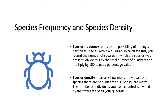Species frequency is basically referring to the possibility of finding a particular species within a quadrat. To calculate this, you record the number of squares in which the species is present, divide that by the total number of quadrats that you have, multiply by 100, and you get a percentage value. Species density, on the other hand, is measuring how many individuals of a species there are per unit area. In this case, you count the number of individuals and you divide by the total area of your quadrats. I have an example on the next slides that would help you understand better.